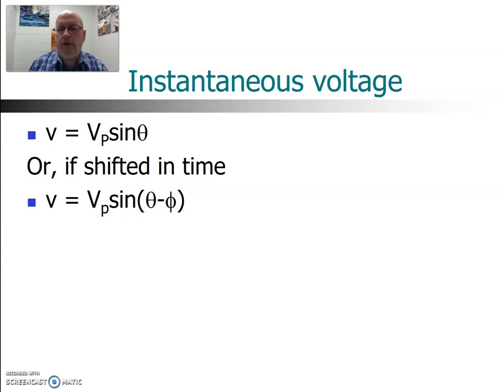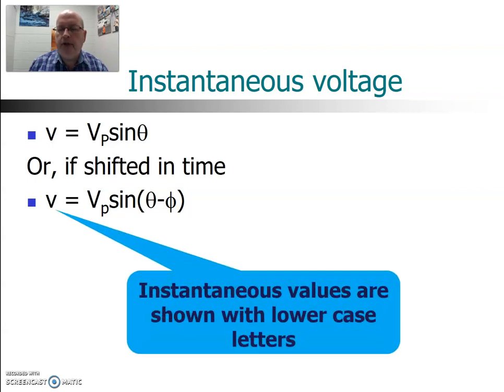All right, if we look at the instantaneous value of the voltage, what is the value of the voltage at an instant in time? We would show that with a lowercase v, and that would be simply the peak value times the sine of the angle. We're going to measure our time in terms of angle within that cycle of the waveform. If you shift it in time, you just shift it by an angle and just subtract that off before you take this sine. So, again, instantaneous value shown with lowercase v.